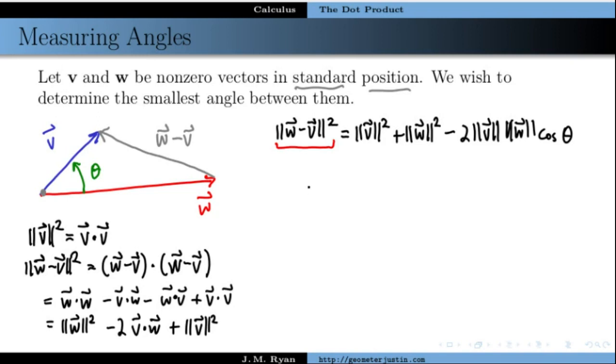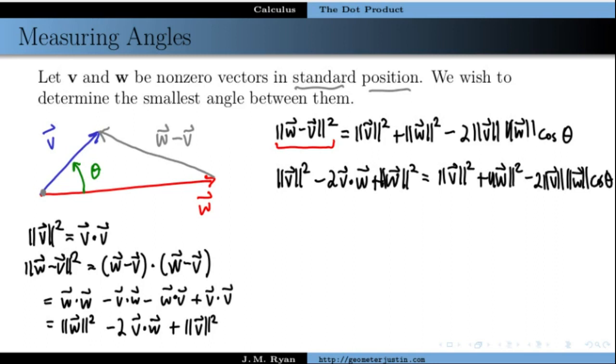All right, and we can plug that into the left-hand side of our law of cosines up here, and I'm going to change the order a little bit, so we can write this as v squared minus 2 v dot w plus length of w squared equals length of v squared plus length of w squared minus 2 times this cosine product.